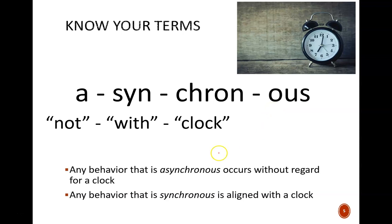Splitting apart that term gives us asynchronous. The prefix a just means not. The syn means with or together. The chron means clock or time. And this final ous just means the word is an adjective. Putting it all together tells us that asynchronous means not with clock. So any behavior or circuit that occurs without regard for a clock is called asynchronous. Conversely, any behavior that is aligned with the clock is synchronous.